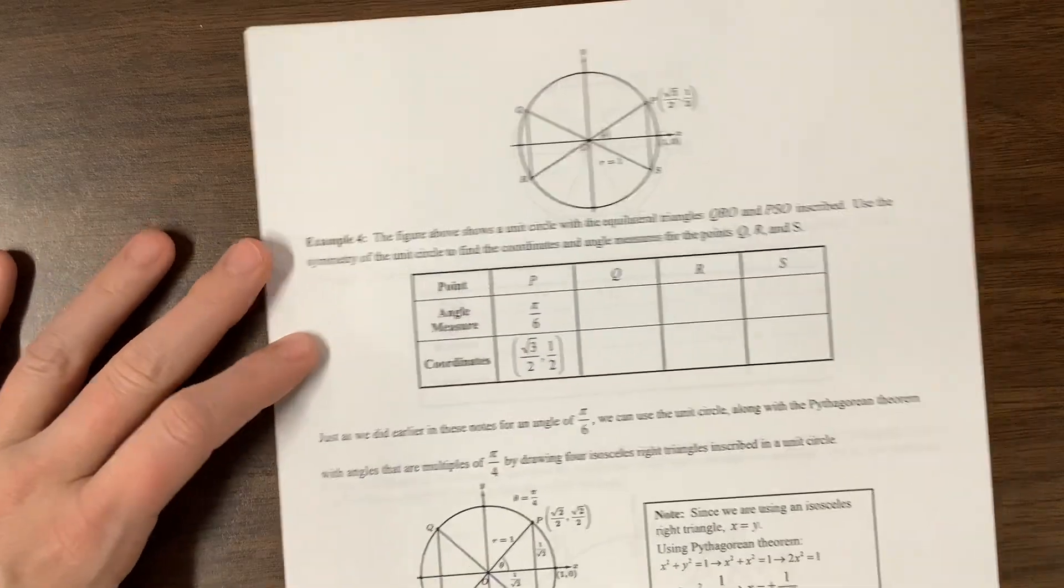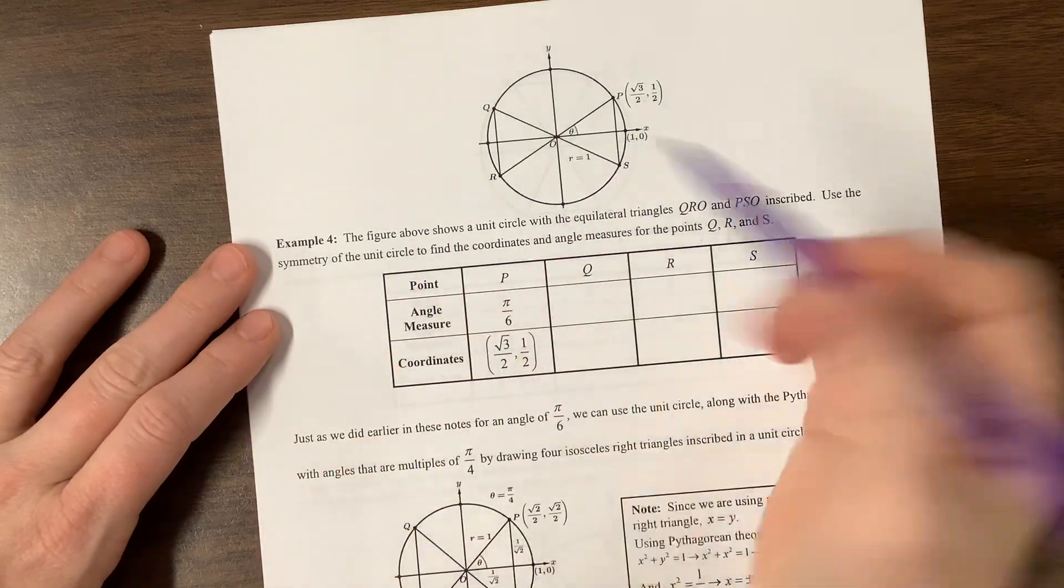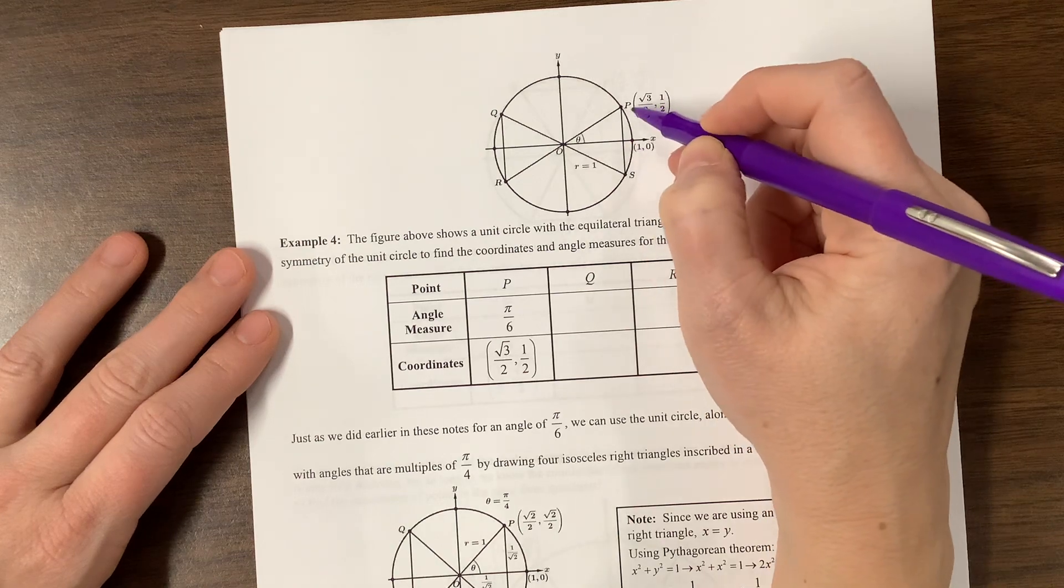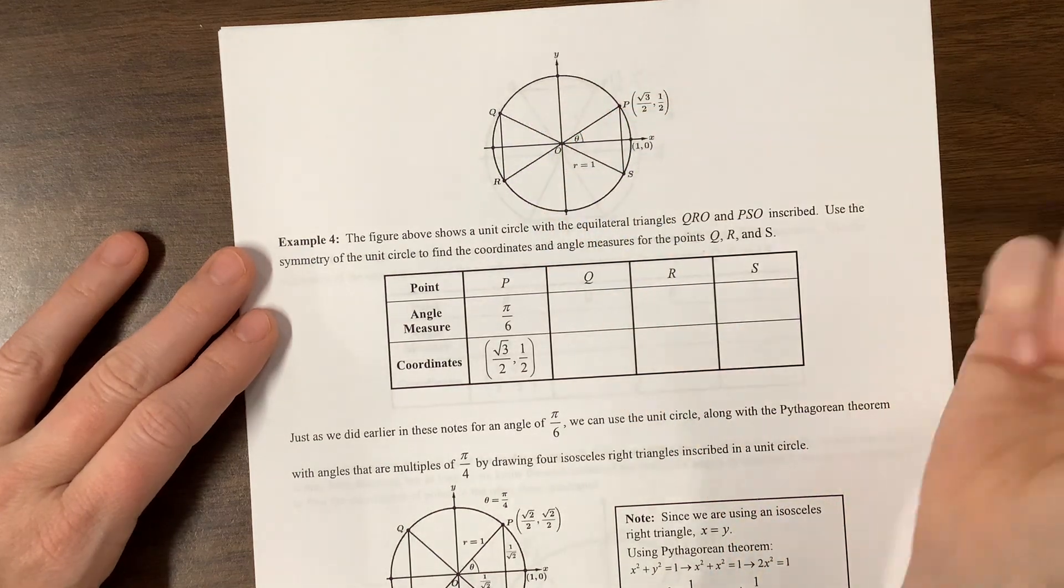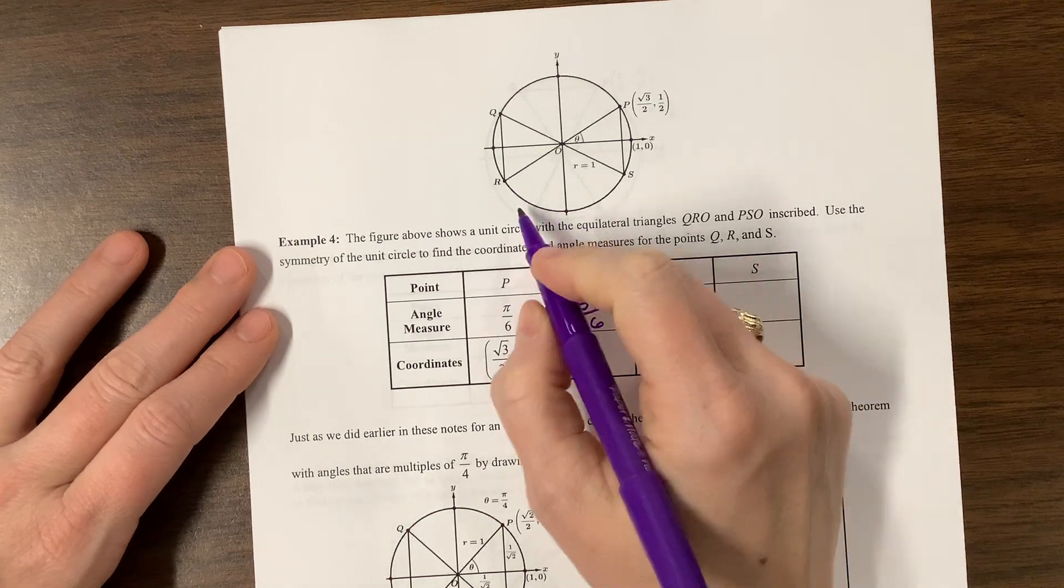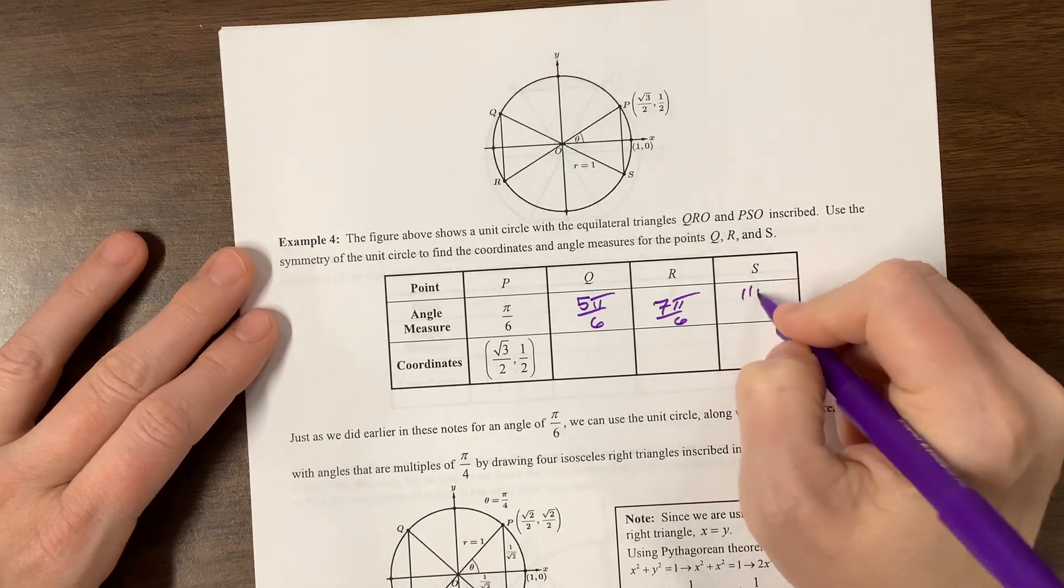So what I like to do with this is use the fact that this is a reference angle, is what we talk about in my classroom, to use this to reflect, reflect, reflect. So Q is going to be 5 pi over 6, R is going to be 7 pi over 6, and S is going to be 11 pi over 6.